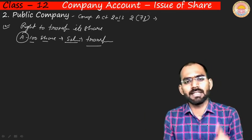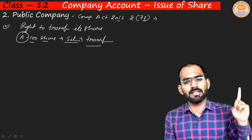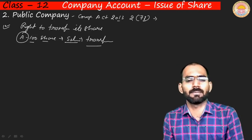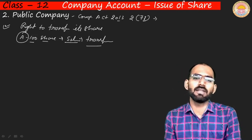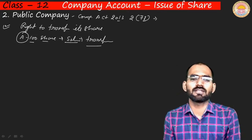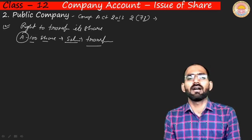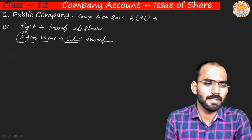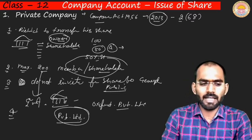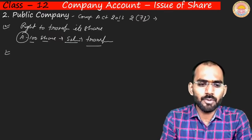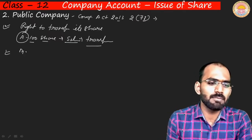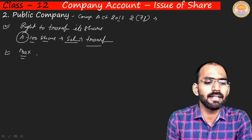In the case of a public company, transfer of ownership is allowed — shareholders can transfer their ownership to another party. Regarding members: in a private company, maximum is 200, minimum is 2. But in a public company, the minimum members are 7, and there is no maximum limit.